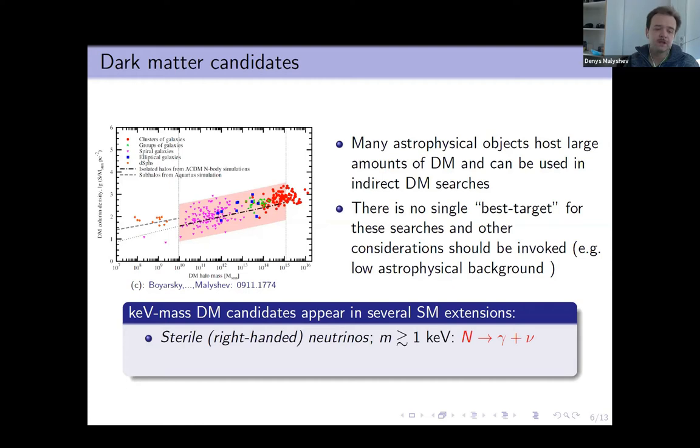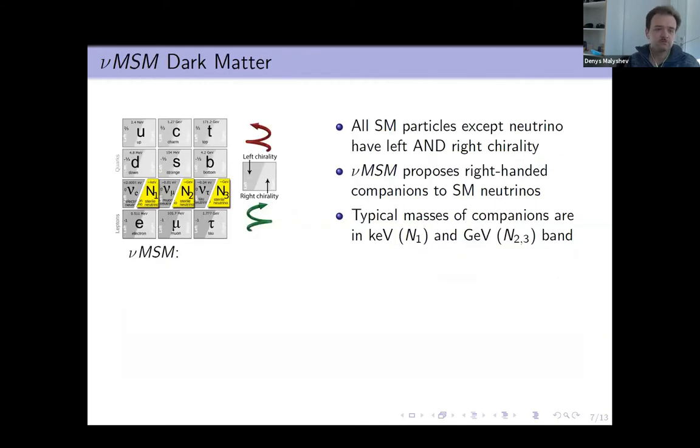νMSM dark matter naturally appears in the keV band. First one is right-handed neutrino which has typical masses of about one keV. We expect them to decay over a photon and a neutrino. And the dark photon, which for masses lower than electron mass can preferably decay over three photons.